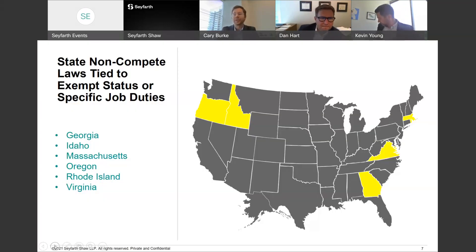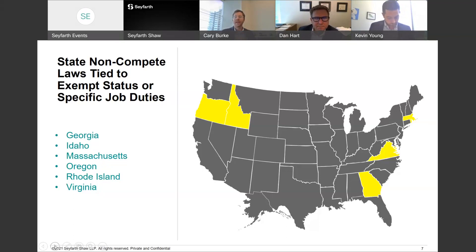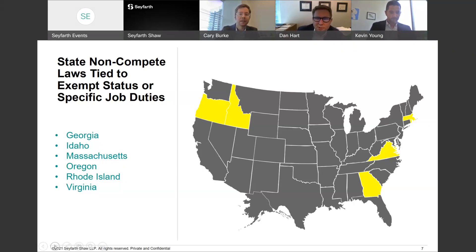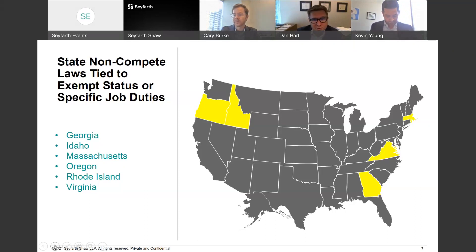Some states have statutes requiring that workers be exempt either under the FLSA or the corresponding state wage and hour law to be bound by a non-compete, or require that they perform certain types of duties. States where this is the case include Georgia, Idaho, Massachusetts, Oregon, Rhode Island, and Virginia. Employers with workers in these states should be aware of these laws before rolling out or seeking to enforce non-competes.